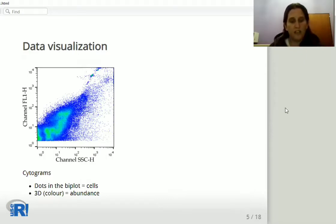Cytometric data can be visualized through cytograms, which are bioplots of channels, where dots represent cells and 3D color their abundance.